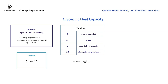The most common specific heat capacity value that you will come across in questions is that of water. It is 4200 joules per kilogram per Kelvin. This value means that if we have one kilogram of water and we want to raise its temperature by 1 Kelvin or 1 degree Celsius, we have to supply 4200 joules of energy to the water.